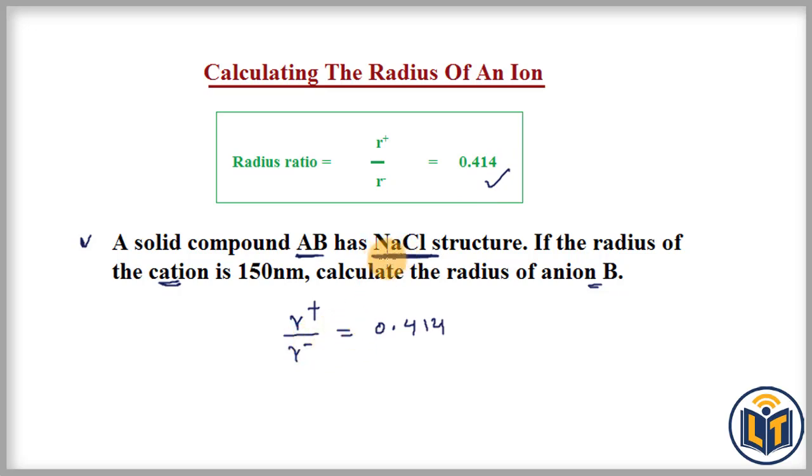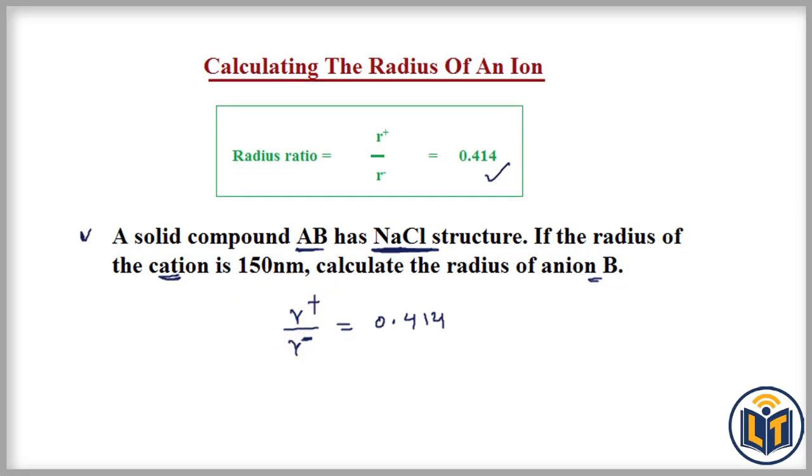This is how we select the radius ratio formula. First we need to find out the structural arrangement in the type of structure, then we can select the radius ratio formula. We can plug in the values. Cation means r+ ion value is given, that is 150 nanometers, and we can find out the radius of anions.